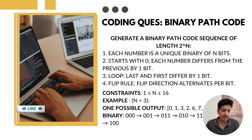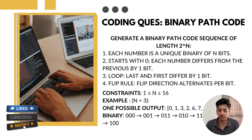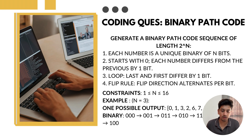The problem statement is set at XYZ, where you are helping build a next-generation security system powered by a sequence of binary codes called a binary path code. This sequence is used to access a digital vault, must follow a structured bit-flip pattern to reduce system noise and ensure stability, and must follow specific rules similar to gray code with additional constraints.